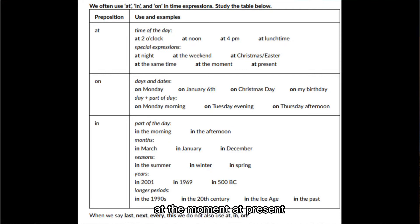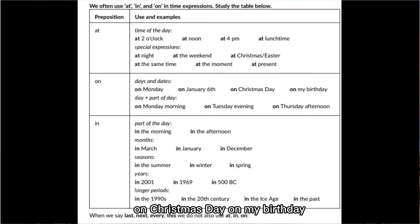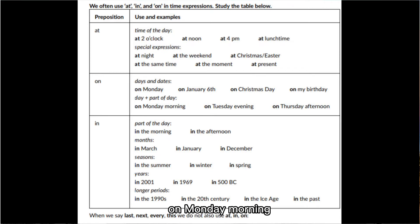Then we can see 'on' — used for days and dates: on Monday, on January 6th, on Christmas Day, on my birthday. Also for a day plus part of the day: on Monday morning, on Tuesday evening, on Thursday afternoon.